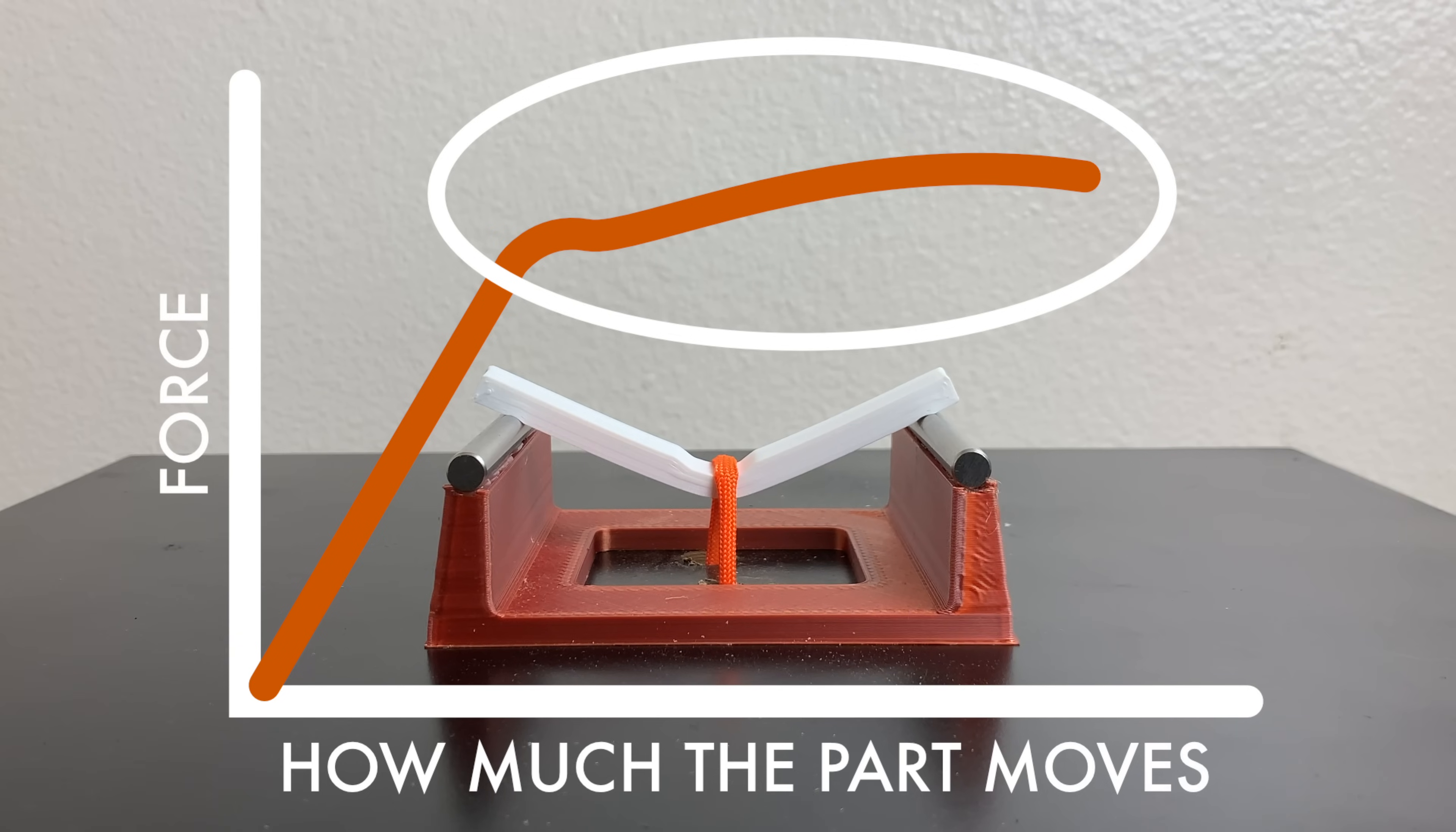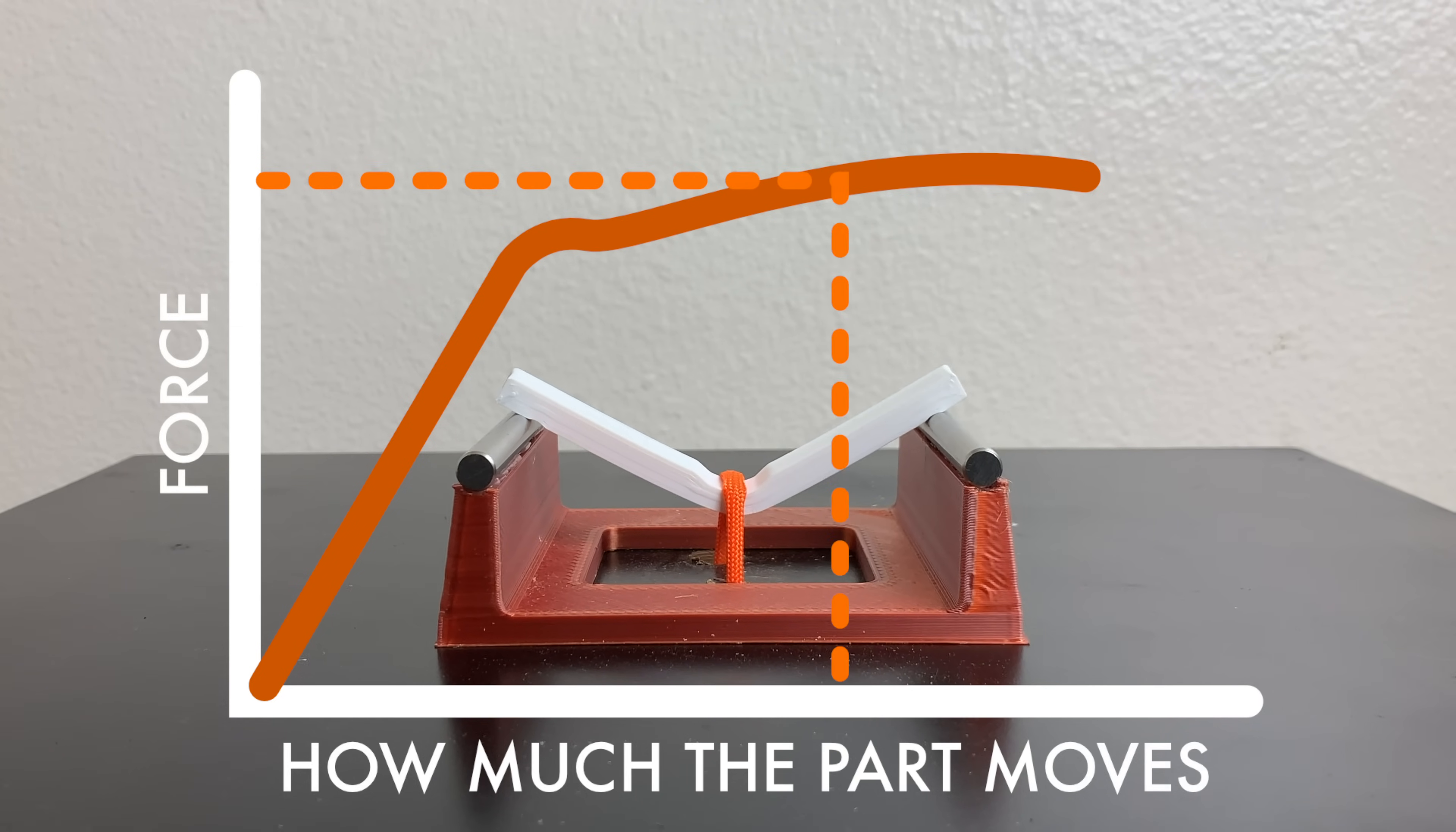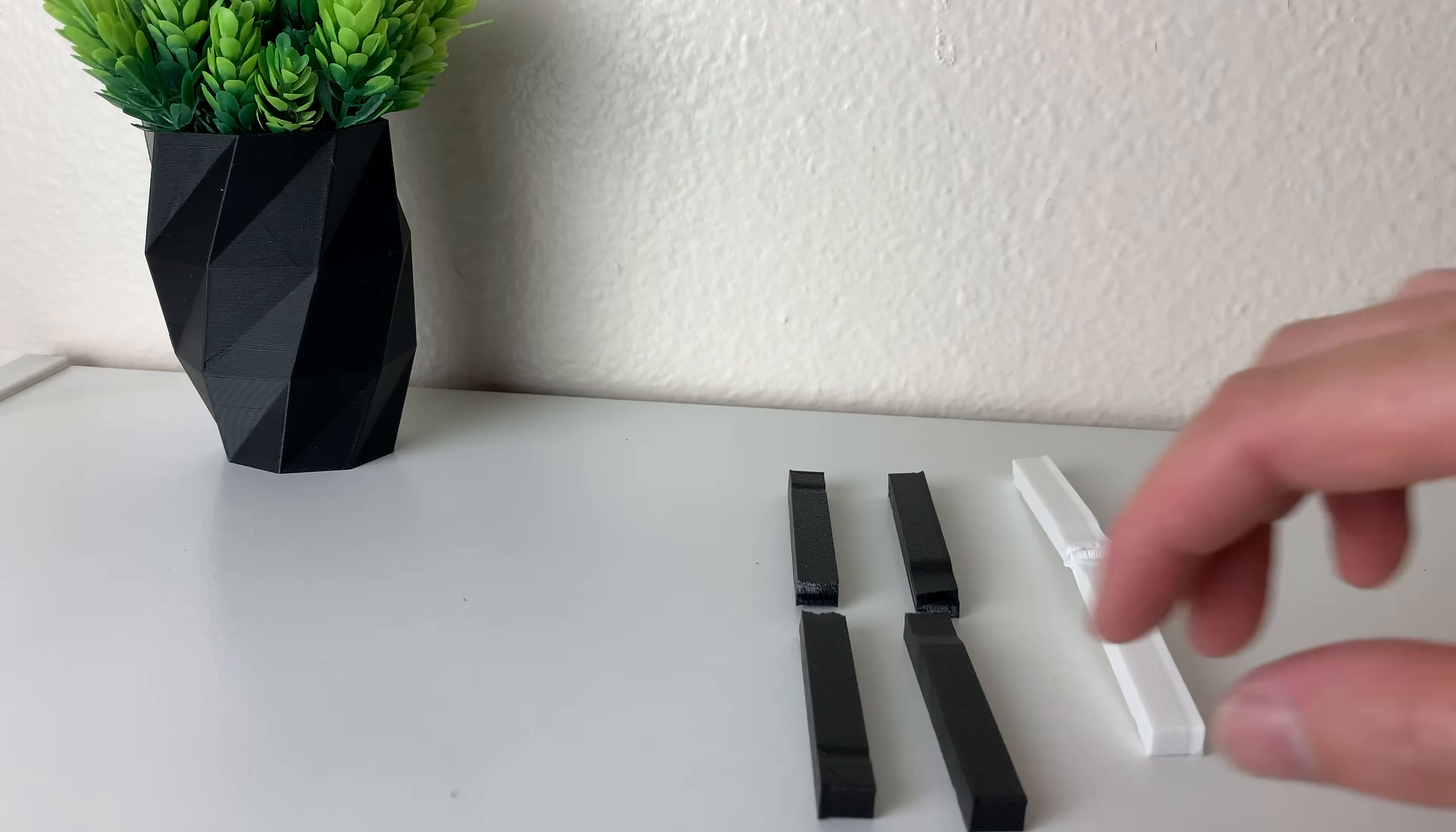But what's with the weird part of the graph up here? Why is it such a different shape? Basically you get to a point where it doesn't matter how much force you're applying, the part's just going to keep moving or bending. We're basically applying the same amount of force but the amount that the part moves or bends keeps increasing.